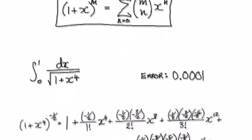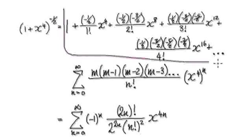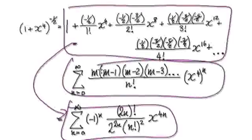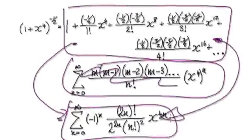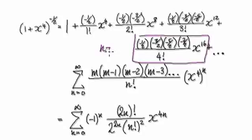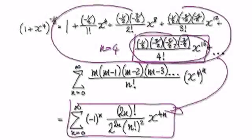Following on from the previous video, we got to the stage where we can rewrite this expression, but it's not very useful in that form. We need to somehow get from here to this more elegant form. So let's zoom into this block here when n equals 4 and try to see how we can represent this whole thing as this elegant expression.